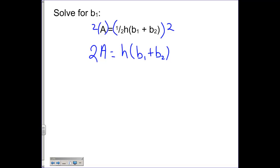Next thing I'm going to do is get rid of the h. So I'm going to divide both sides by h because it's multiplying. And that will give me 2a over h is equal to base 1 plus base 2.